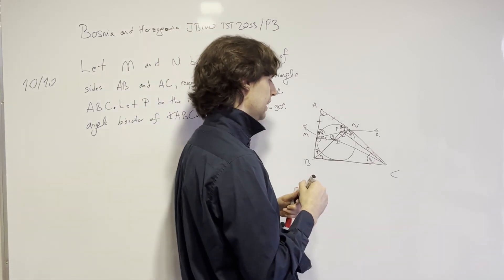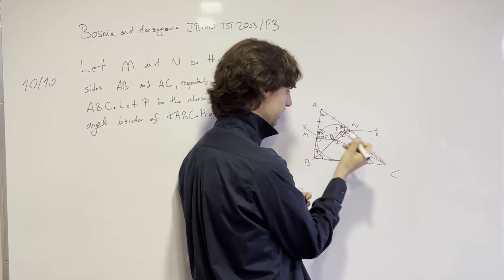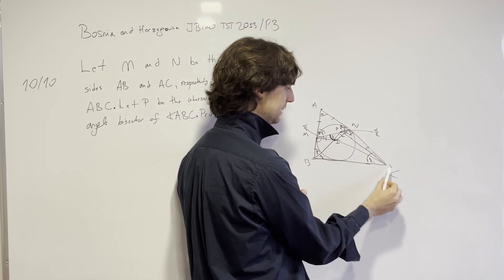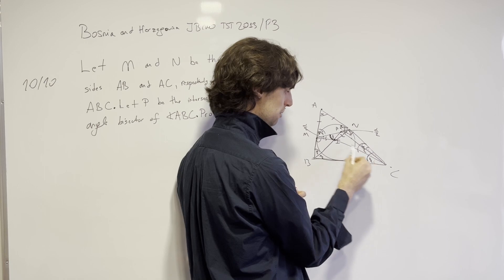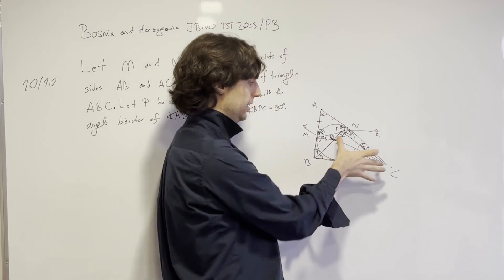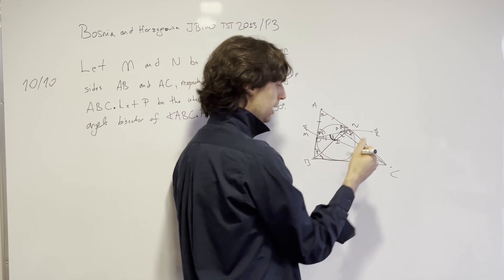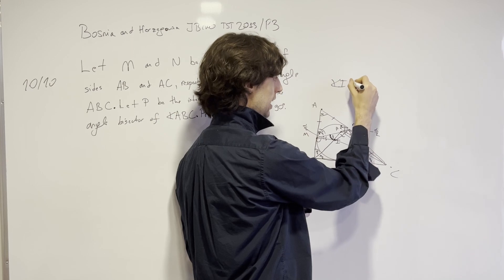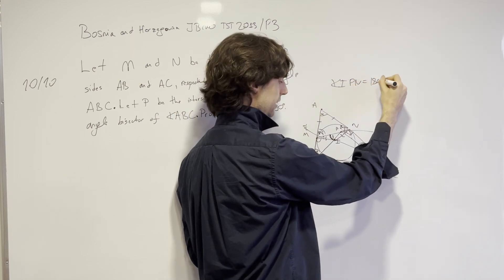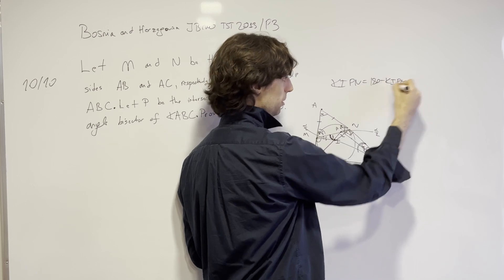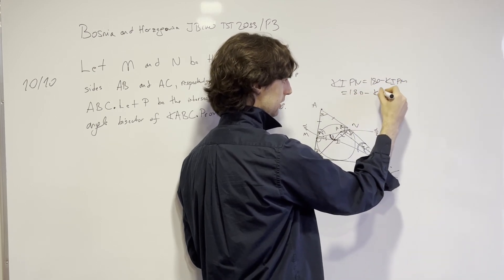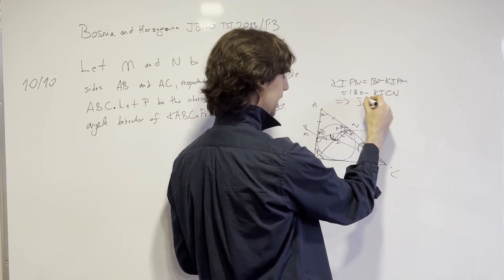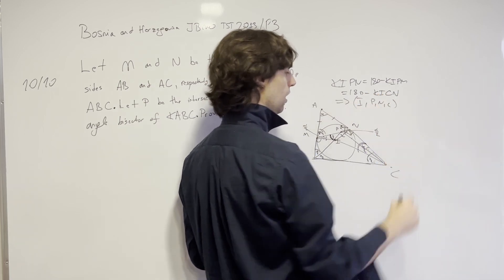The answer is I do, because this angle right here we calculated before, BPM is gamma/2. And the angle ICN is also gamma/2, because this is the angle bisector. IC is the angle bisector of ACB. Given this one's gamma/2, and so given IPN equals 180 minus the angle IPM, which equals 180 minus the angle ICN, this implies that I, P, N, and C are concyclic with these four points along the same circle.